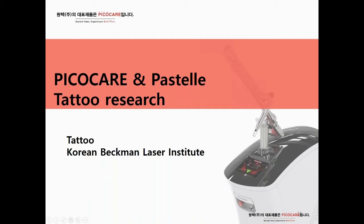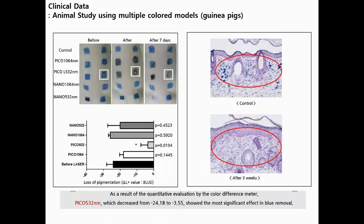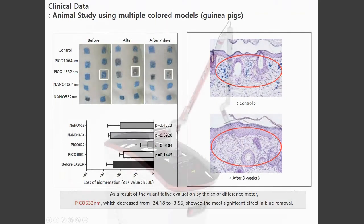They compared both systems in the efficacy of treating tattoo materials, and this is one example of a large experiment. For the blue color tattoo, they showed results at 1064 and 532 nm in both Pico and nanosecond treatment.